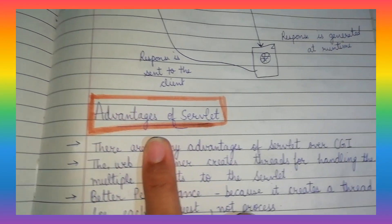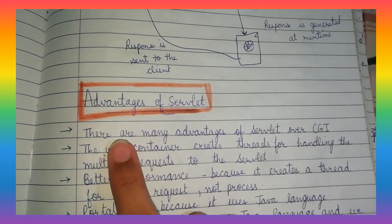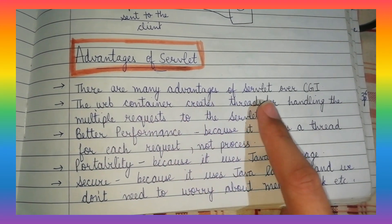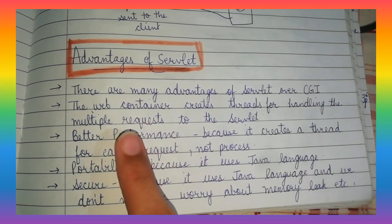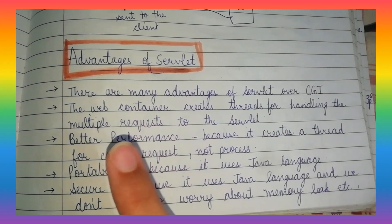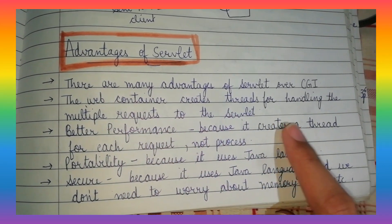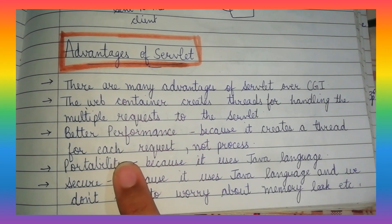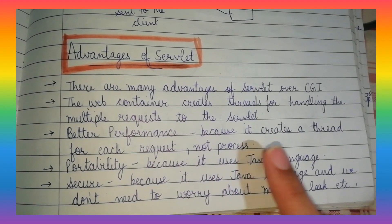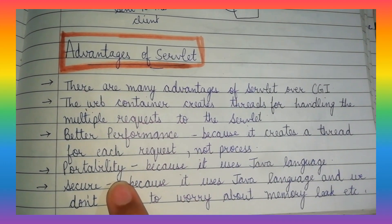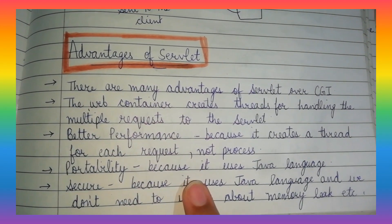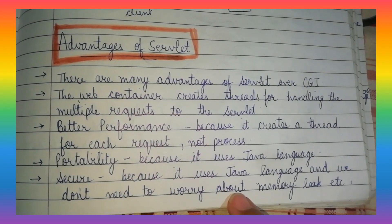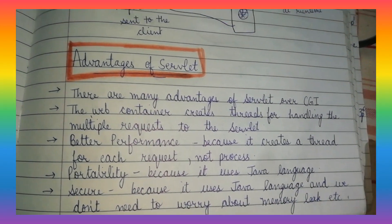Now let's discuss about the advantages of servlet. There are many advantages of servlet over CGI. The web container creates threads for handling the multiple requests to the servlet. First one is better performance, because it creates a thread for each request, not a process. Second one is portability, because it uses Java language so it is portable. Third one is security, because it uses Java language and we don't need to worry about memory leaks etc.